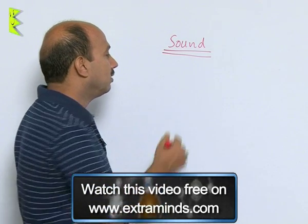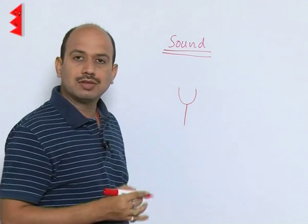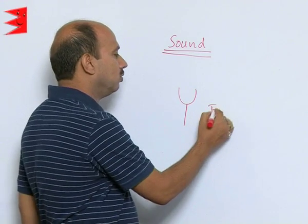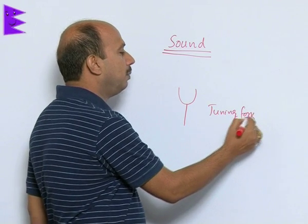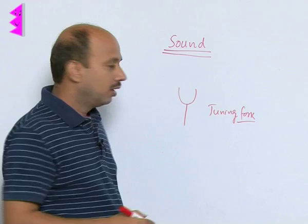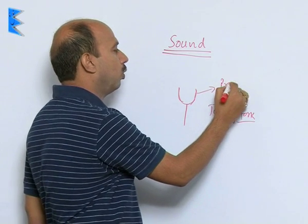Similarly, if you take an example of the tuning fork like this, this instrument you can see in a laboratory. This is called here a tuning fork. If you have taken an example of the tuning fork, hit these prongs—these are called here prongs.